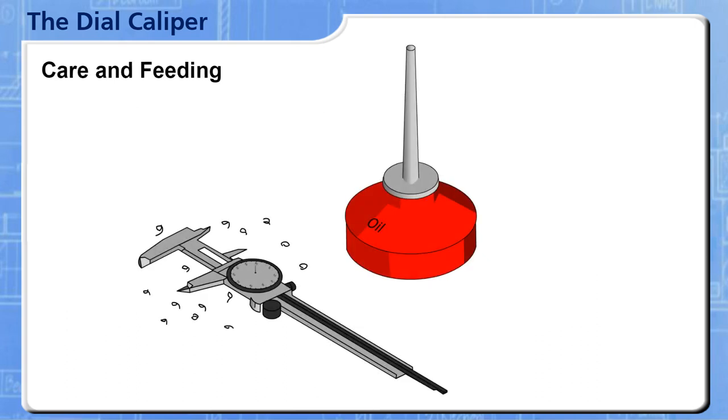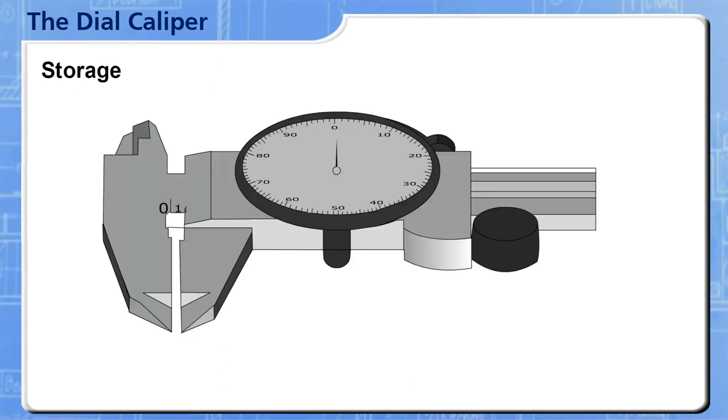Keep your calipers away from oil and chips. Chips that get stuck in the caliper rack can be difficult to remove. Store your calipers horizontally in a case with the jaws slightly open. The metal-to-metal contact of closed jaws can corrode them.